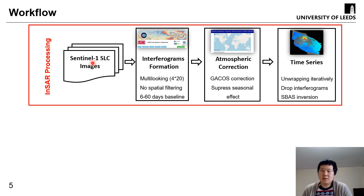Here is our workflow. We start from the Sentinel-1 SLC images, form interferograms by multi-looking and spatial filtering, and generate baseline-temporal interferograms from 6 to 60 days. We use GACOS to do the atmospheric correction to reduce noise as well as suppress the topographic signal effect. We then use the StaMPS software to do the time series analysis.